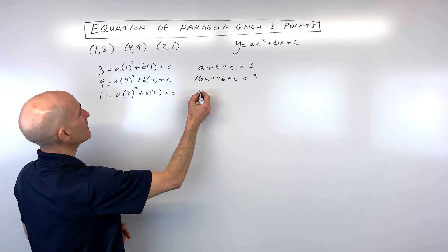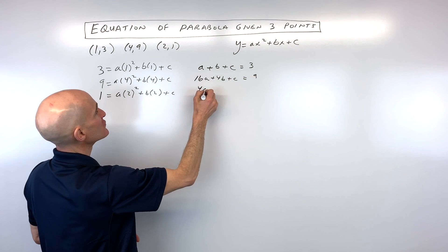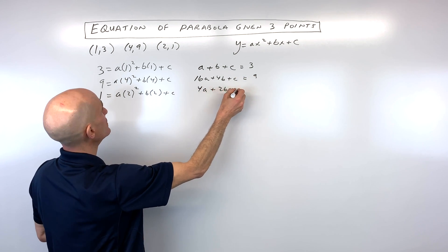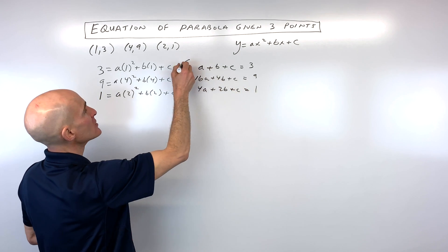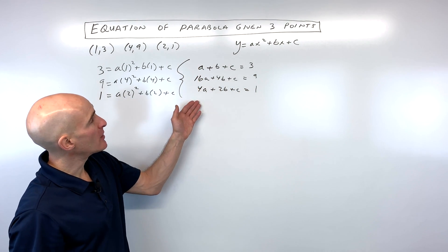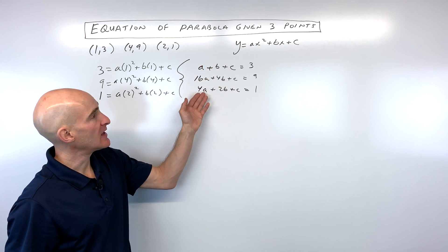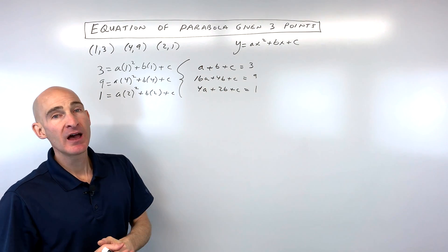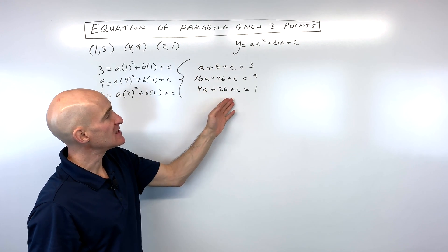And then over here we've got 2 squared is 4, so that gives us 4a plus 2b plus c is equal to 1. So this is the system right here that we're going to solve. And what you want to do is you want to pick one of the variables to eliminate, either the a's, the b's, or the c's. I think here it's going to be easiest to eliminate the c's.